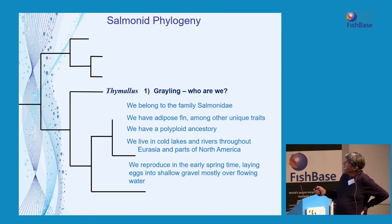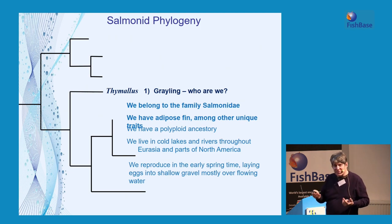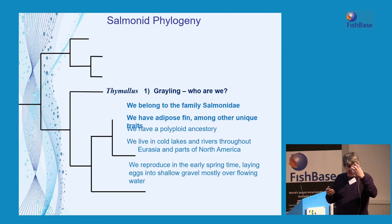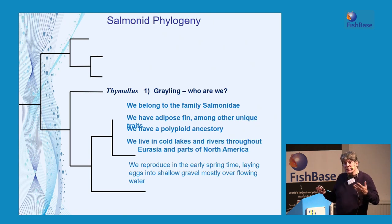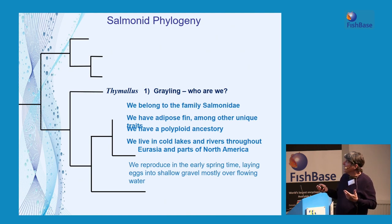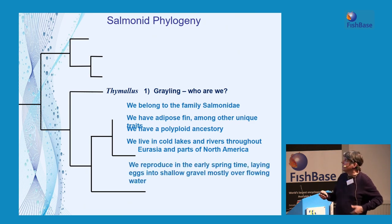So who are grayling? We belong to the family Salmonidae, we have an adipose fin among many other unique traits. There are also bones in the head and the vomer that are diagnostic for salmonid fishes. They have a polyploid ancestry. They live in cold lakes and rivers throughout Eurasia and parts of North America. They reproduce in the springtime, lay eggs in shallow gravel, mostly over flowing water.